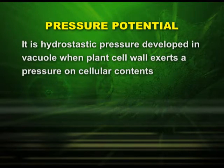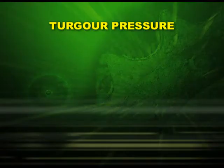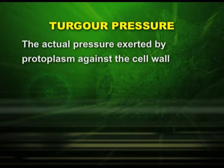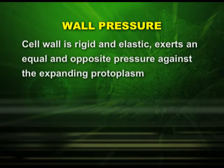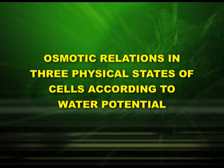The third potential is the pressure potential. It is the hydrostatic pressure developed in the vacuole when the plant cell wall exerts a pressure on cellular contents. There are other terms important in plant water relations: turgor pressure, defined as the actual pressure exerted by protoplasm against the cell wall, and wall pressure — the cell wall is elastic and exerts an equal and opposite pressure against the expanding protoplasm.